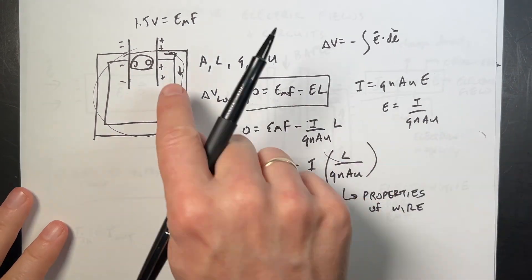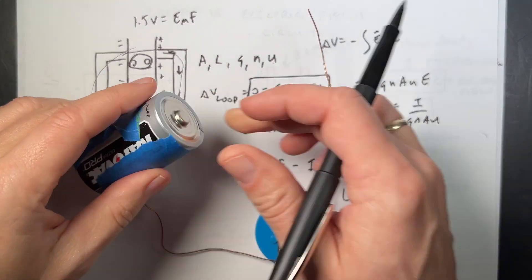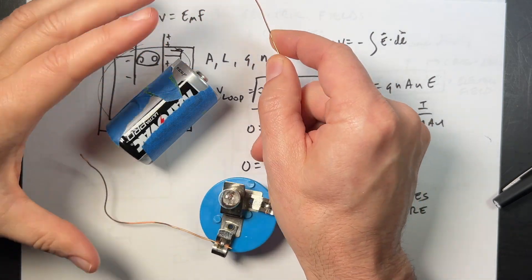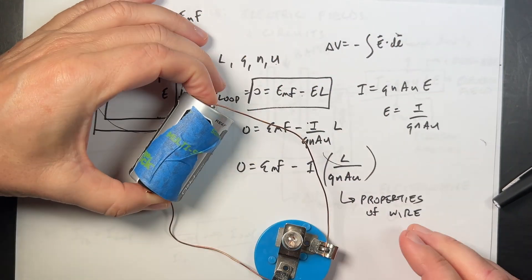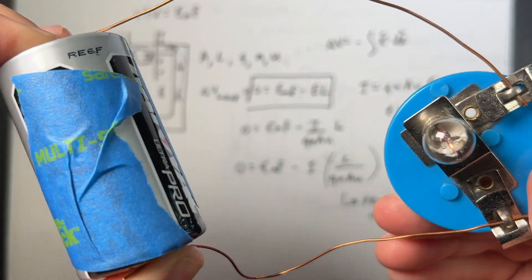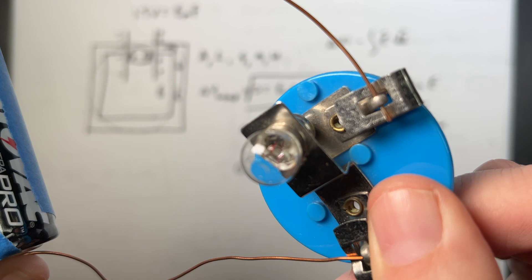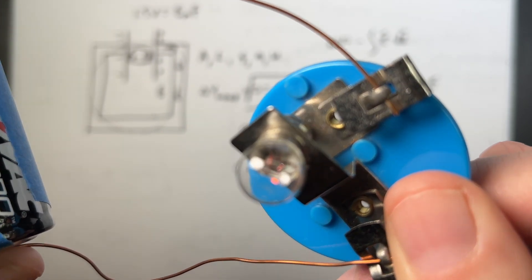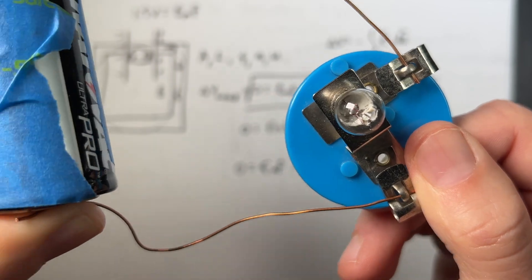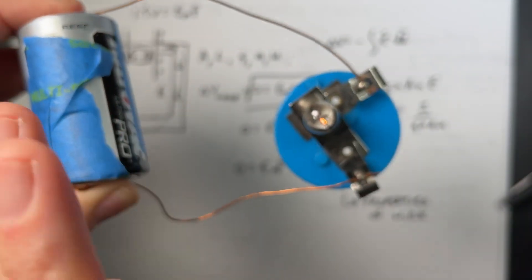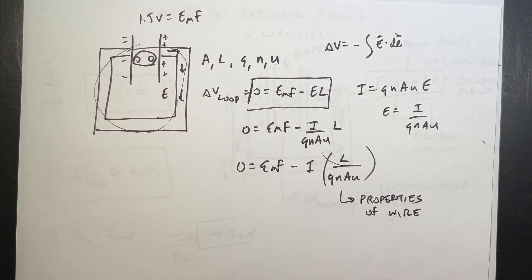That's a simple wire — what would happen with this terrible example of a light bulb? You can see it's on and off. So we can model this as the following.